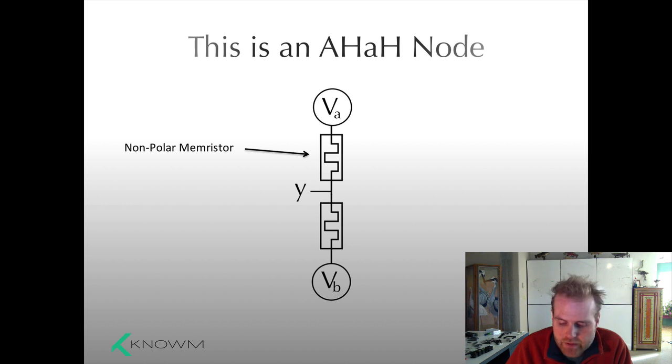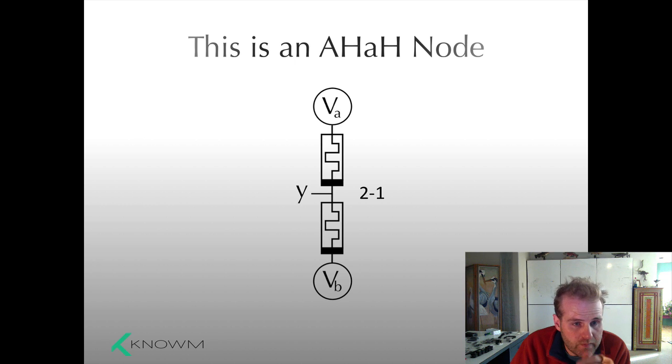There's multiple types of AHA nodes. This is the 2-1 configuration. This is a 2-1 polar configuration. So you apply your inputs here, differential inputs VA and VB.